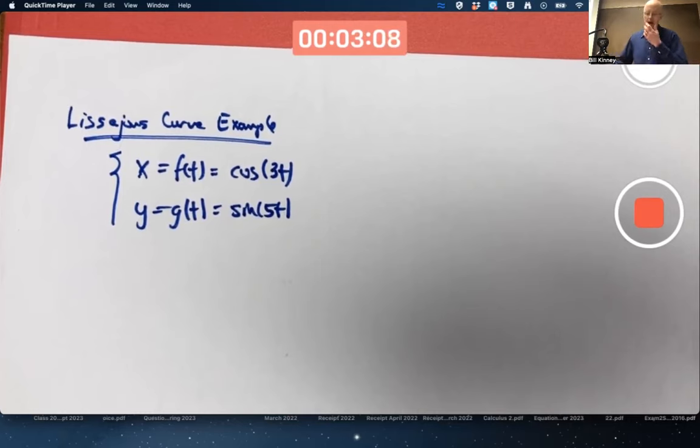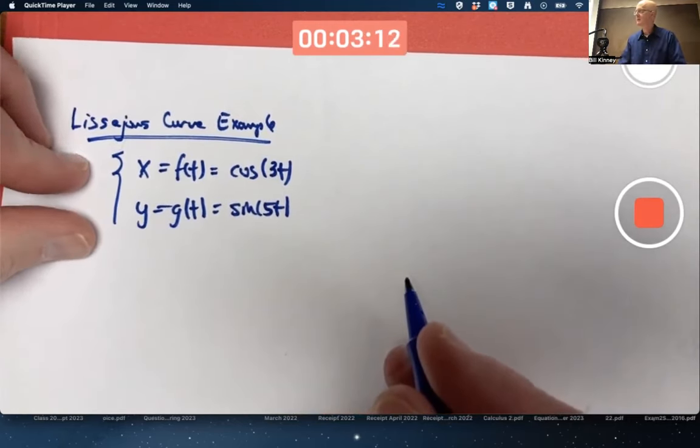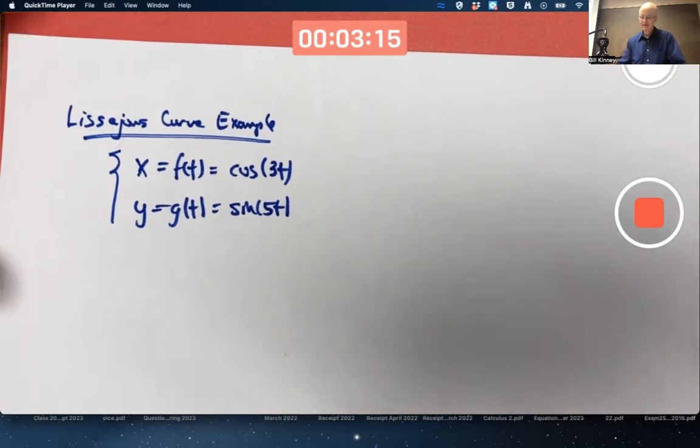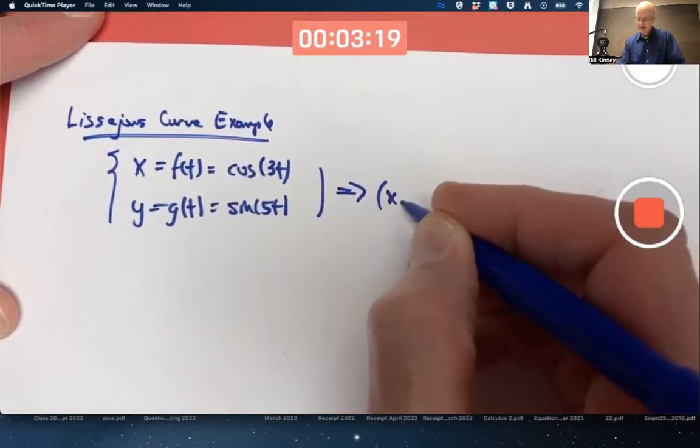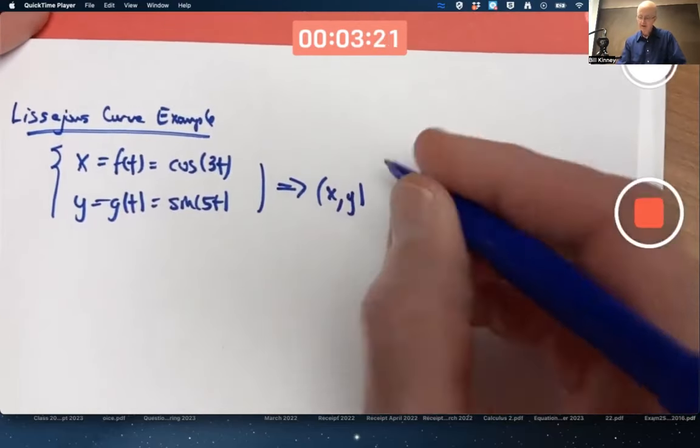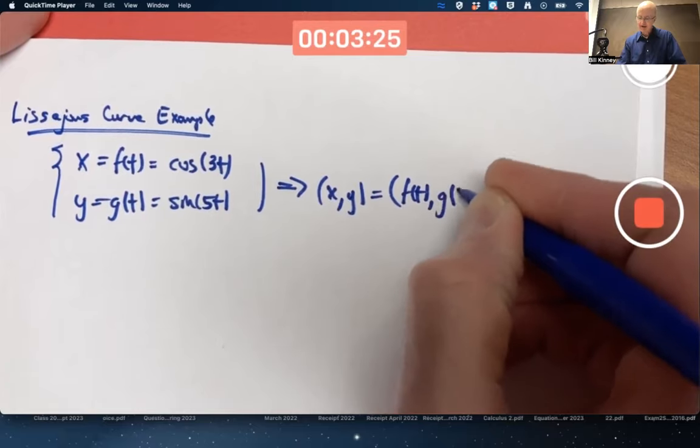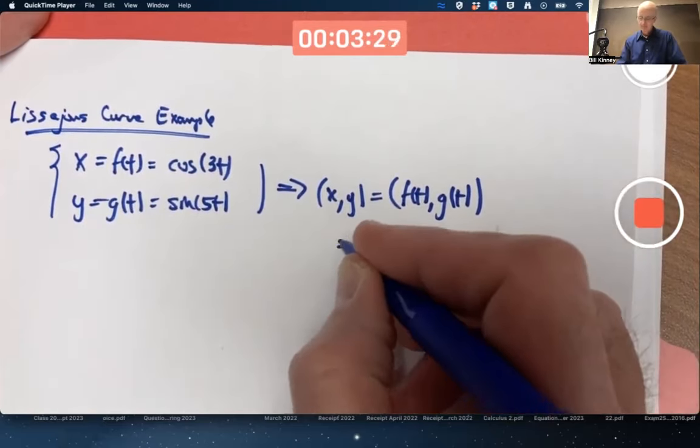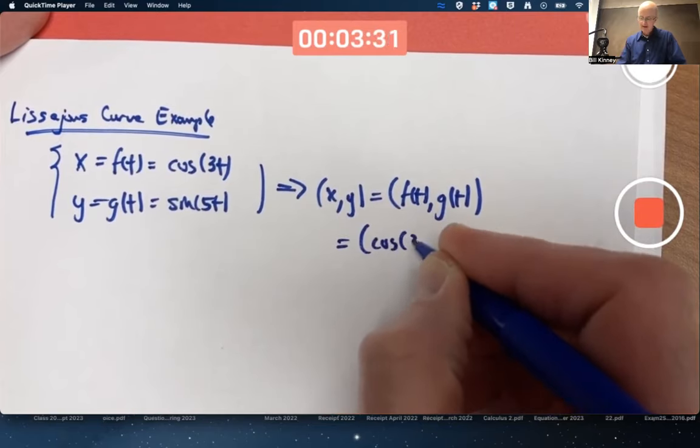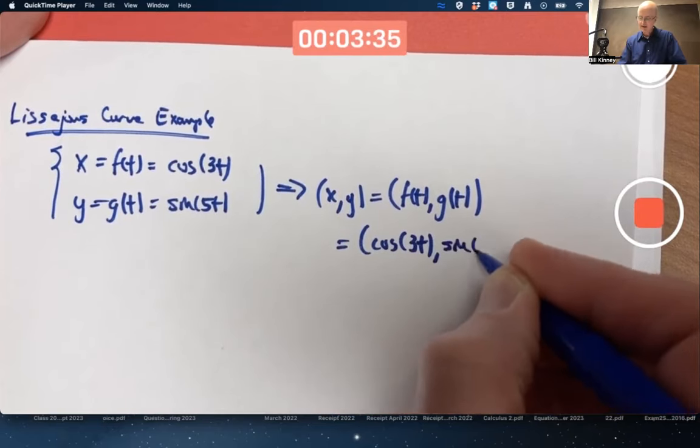I've talked about how these parametric equations, x equals f of t and y equals g of t, considered as two separate equations, can be combined into a single point equation. The Lissajous curve I'm considering is when f of t equals cosine of 3t and g of t equals sine of 5t.